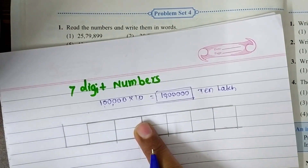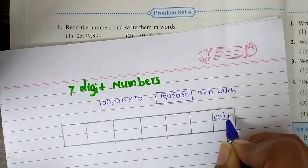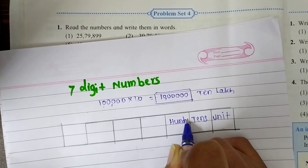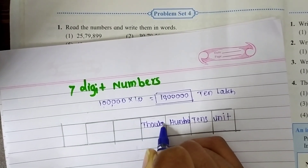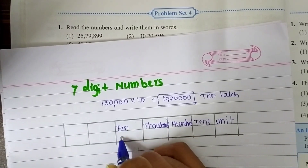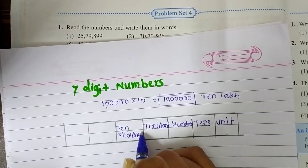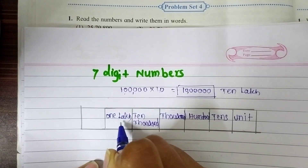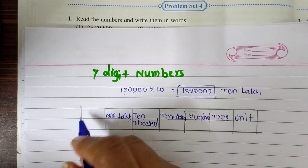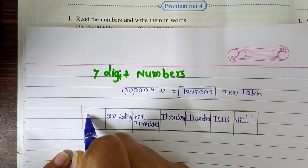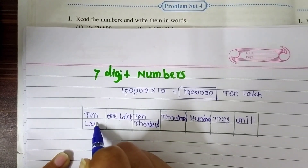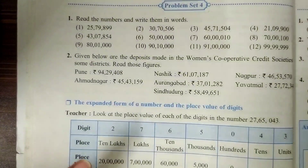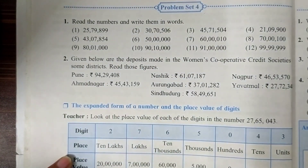To the left side of the lakh place. Look — this is our units place, this is our tens place, this is our hundreds place, this is our thousands place, then ten thousands, then one lakh. In the last video we learnt about 6-digit numbers. Now we have to make one more place for 10 lakhs.